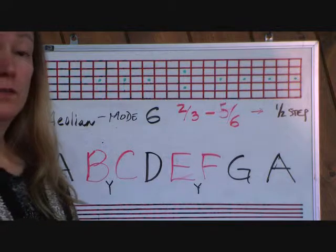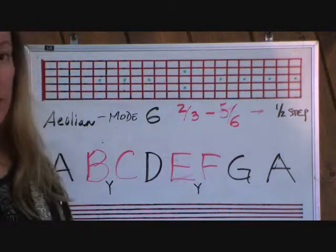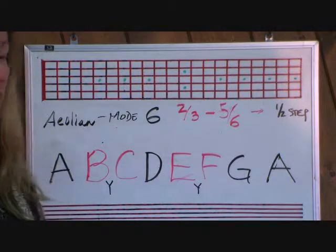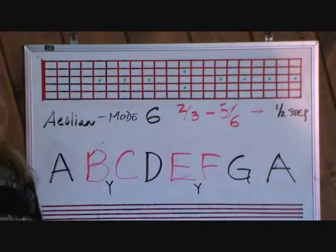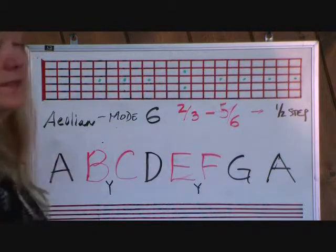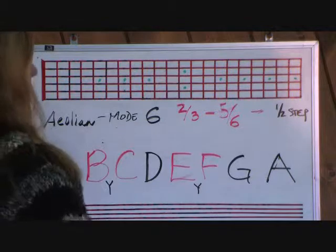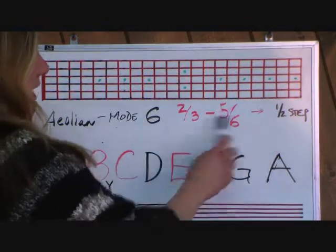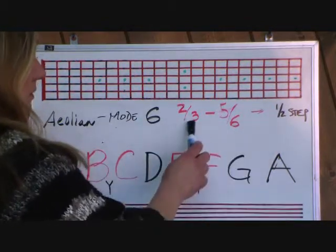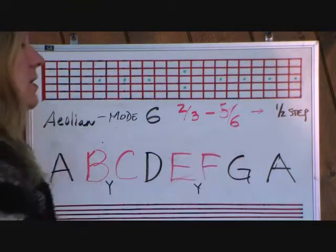Hello everyone. We're going to talk about the Aeolian mode today, mode 6. It's based on the C major scale. This is the formula where the half steps fall between 2 and 3 and 5 and 6.